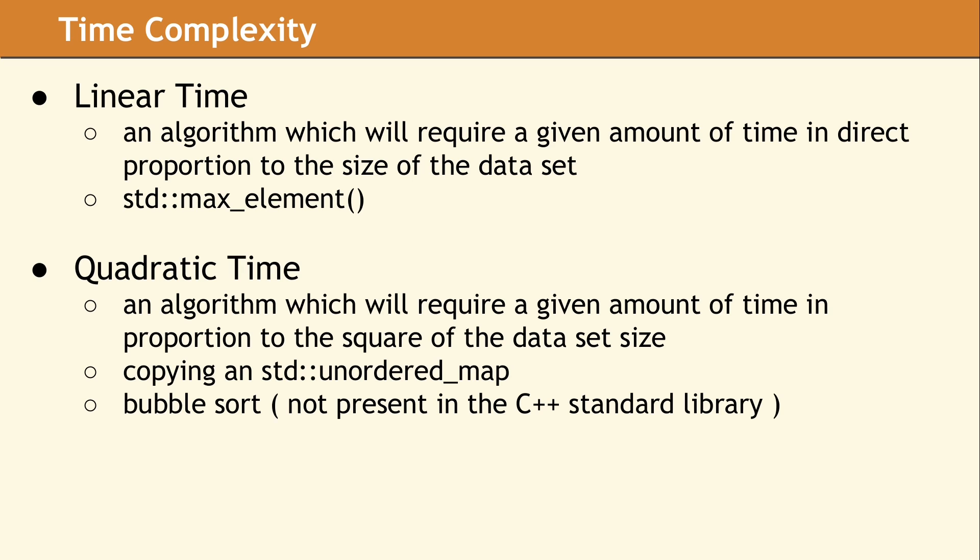Here is an example of why time complexity can vary. Copying an unordered map has a quadratic worst-case time complexity and an average case of linear, which is a huge difference. The worst case of quadratic complexity will only occur if there are a large number of hash collisions, which is very unlikely. Now you know something to look at when your unordered map copy is taking too long.